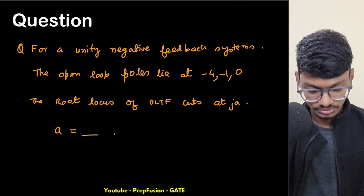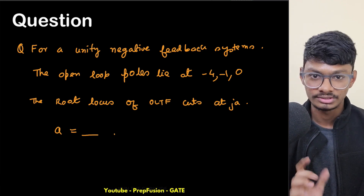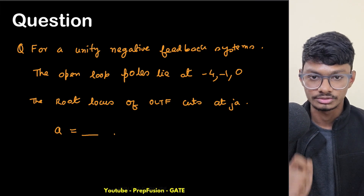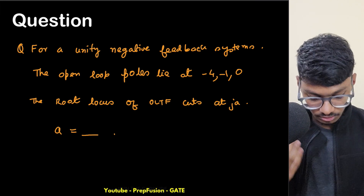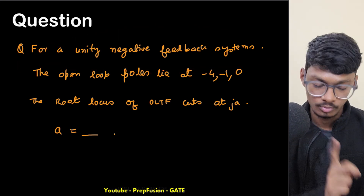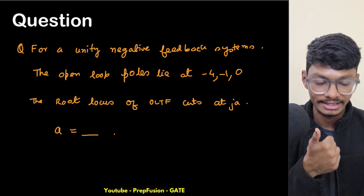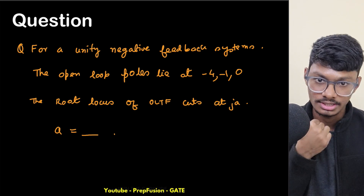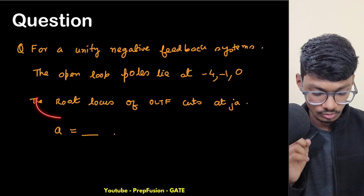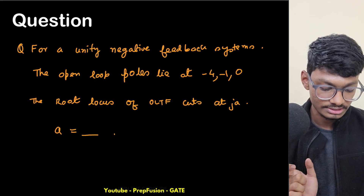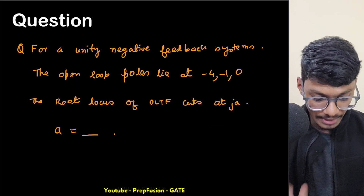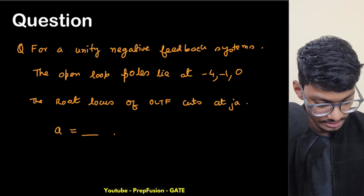Hi everyone, welcome back to Prefusion. I'm back with another control systems question — a GATE instrumentation question from GATE 2024. We have a unity feedback system, and the open loop poles are given: they lie at s = -4, s = -1, and s = 0. Also, it is given that the root locus of the OLTF cuts the imaginary axis at j·a, and we need to find the value of a.